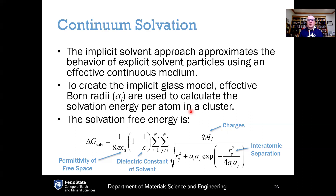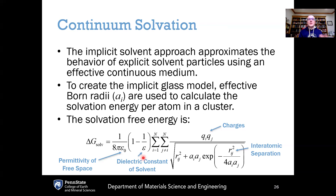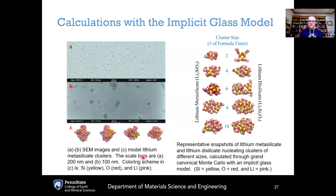Continuum solvation is a standard approach adopted as part of this implicit glass model. The implicit solvent approach approximates the behavior of an explicit solvent using an effective continuous medium. We have effective Born radii a_i that are used to calculate the solvation energy per atom in the cluster. We have an explicit atomic description of the nucleating cluster considering it interacting with the continuous solvent in an effective manner given by the solvation free energy—in terms of Coulombic interactions with appropriate screening depending on interatomic separation distances and the dielectric behavior of the solvent, giving an effective average interaction with the solvent as a whole. The grand canonical part comes in that we can systematically vary the cluster size.